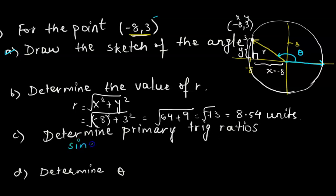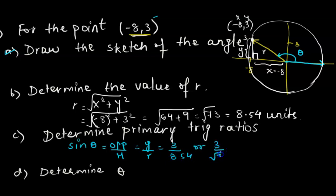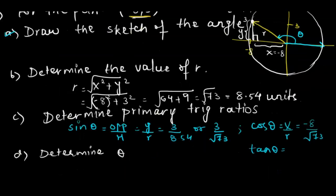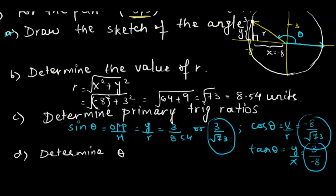Using SOH-CAH-TOA: sine theta = y over r = 3 over square root of 73. Cosine theta = x over r = negative 8 over square root of 73. Tan theta = y over x = 3 over negative 8. We notice sine is positive, while cosine and tan are negative — consistent with being in the second quadrant.